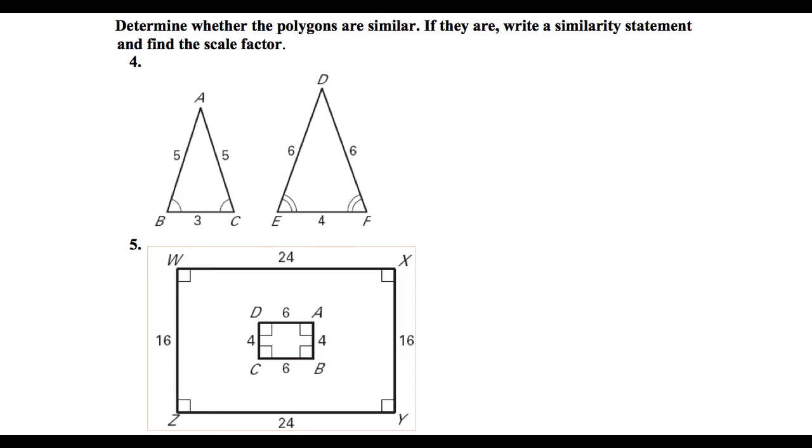In these two examples, we are trying to determine whether or not the given shapes are similar to each other. So here in number four, we have two triangles, triangle ABC and triangle DEF. Notice that they are both isosceles triangles.